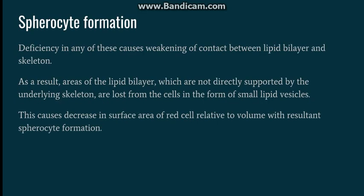Deficiency of any of these proteins leads to weakening of the contact between the lipid bilayer and the underlying cytoskeleton. As a result, there are areas of the lipid bilayer not directly supported by the cytoskeleton, and because these are weak areas, they are lost from the cell in the form of small lipid vesicles. This leads to a decrease in the surface area of the RBC relative to its volume, causing the cell to change its shape from biconcave to a spherocyte.